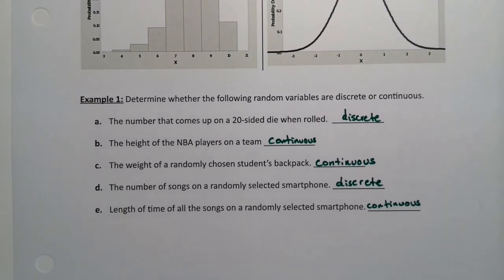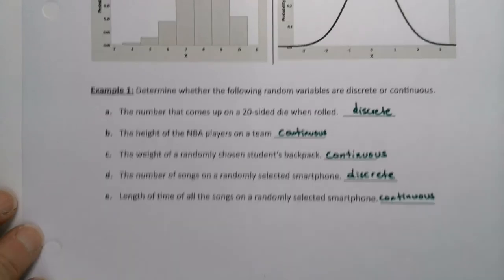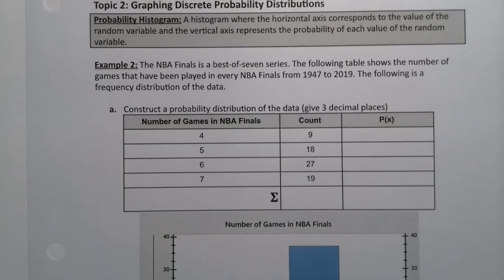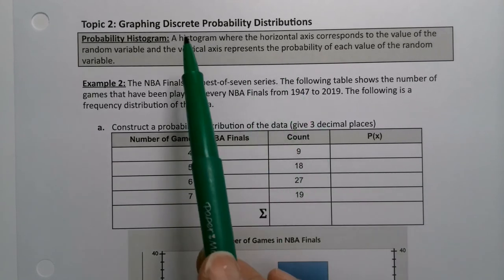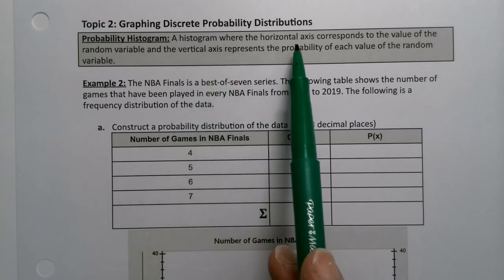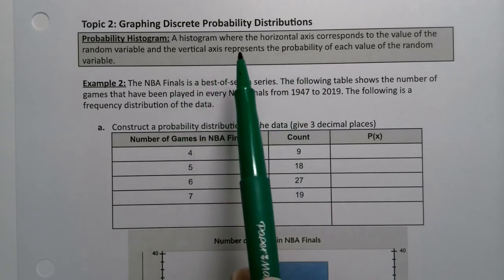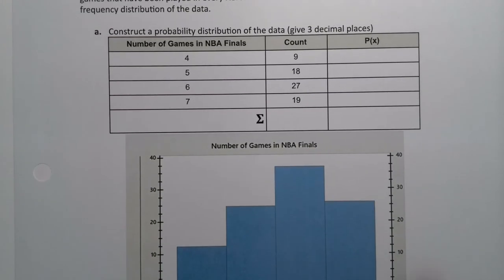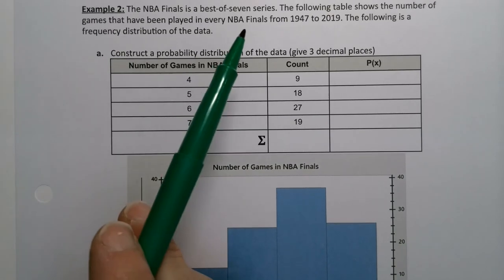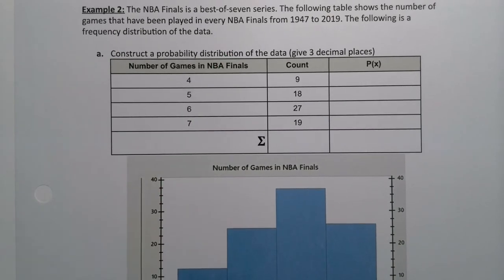Now we could see in this picture right here that you can do something similar to what we did in Chapter 2. You can make a histogram, right? So you can make a probability histogram, which is what we were just looking at. A histogram where the horizontal axis corresponds to the value of the random variable and the vertical axis represents the probability of each value. So let's look at an example here. The NBA Finals is a best-of-seven series. The following table shows the number of games that have been played in every NBA Finals from 1947 to 2019. And the following is that frequency distribution of that data.